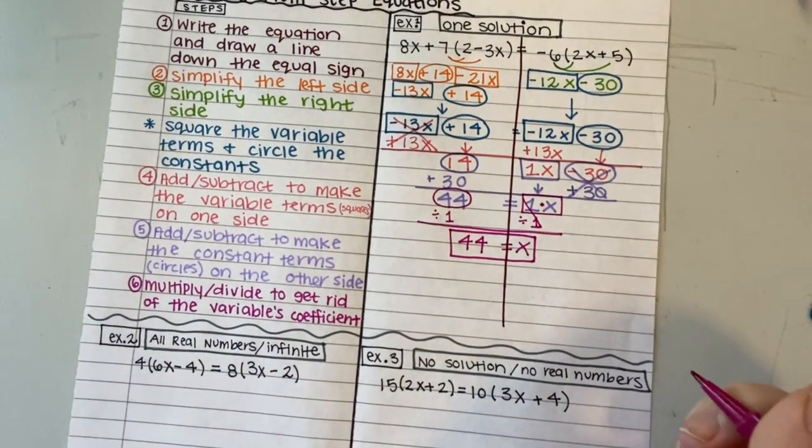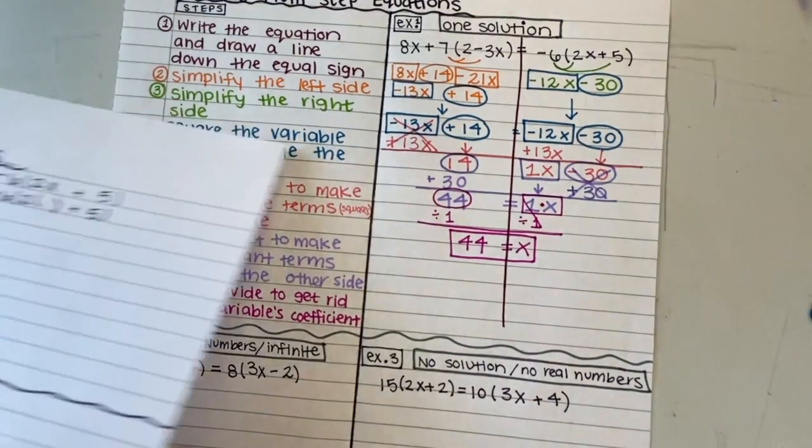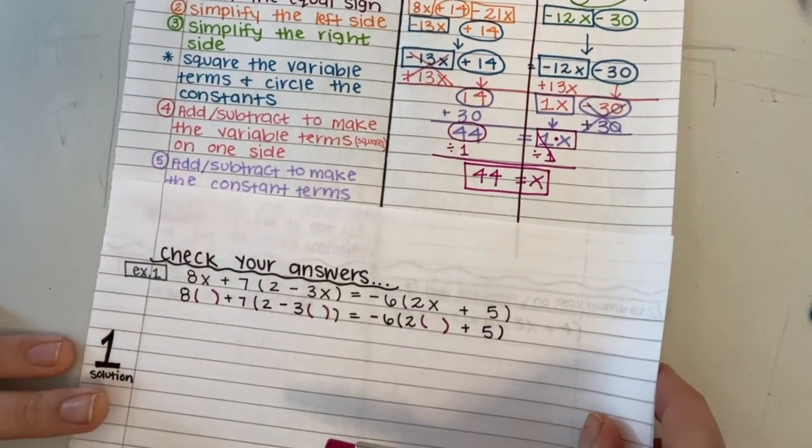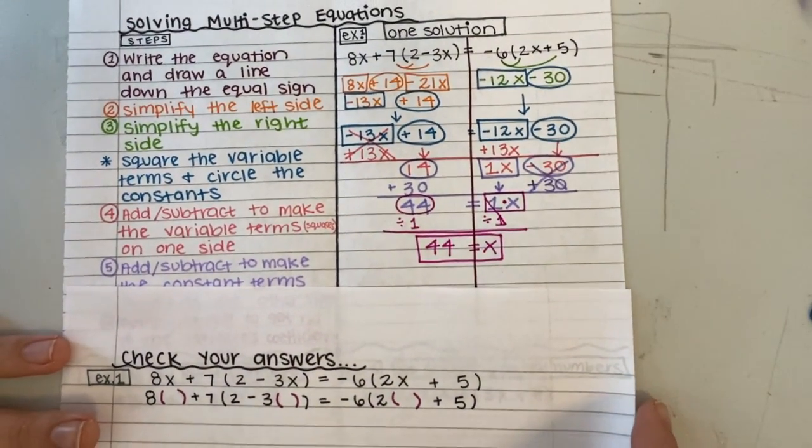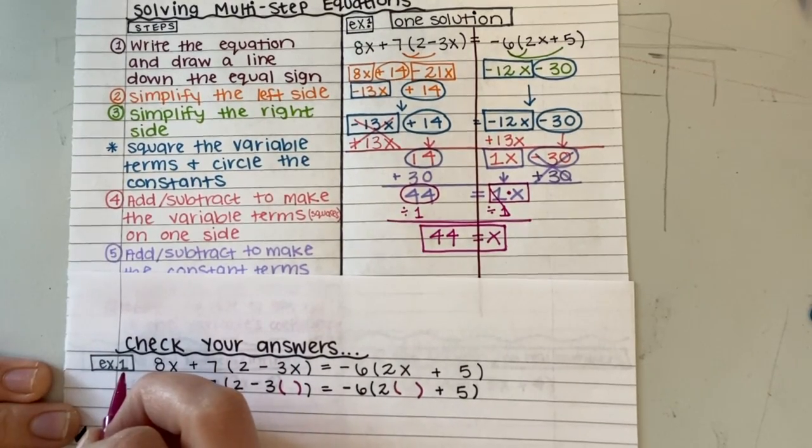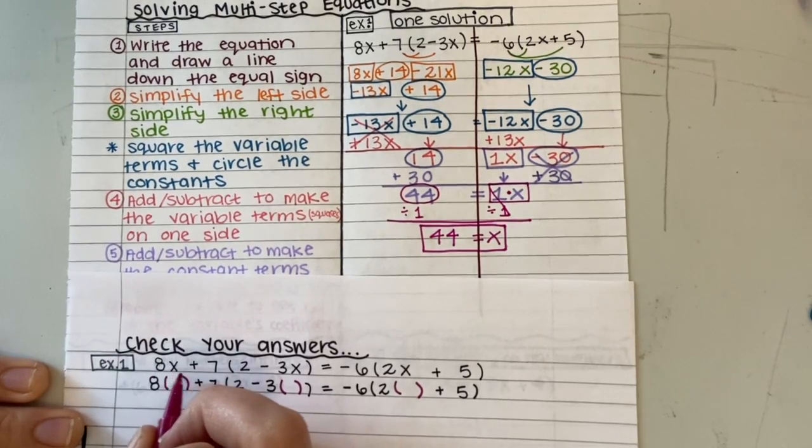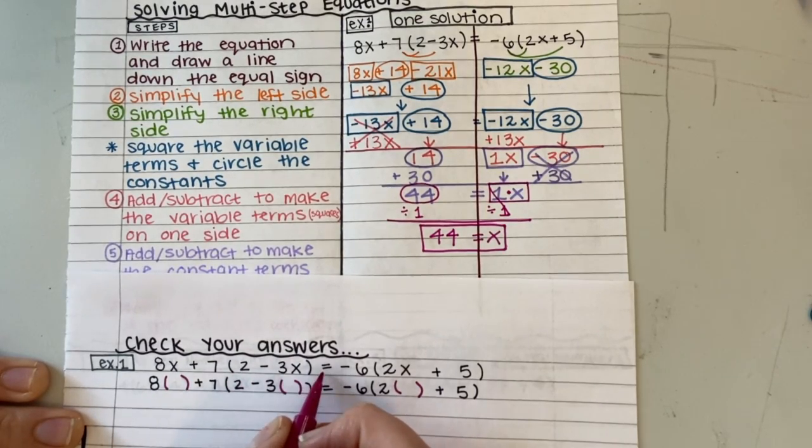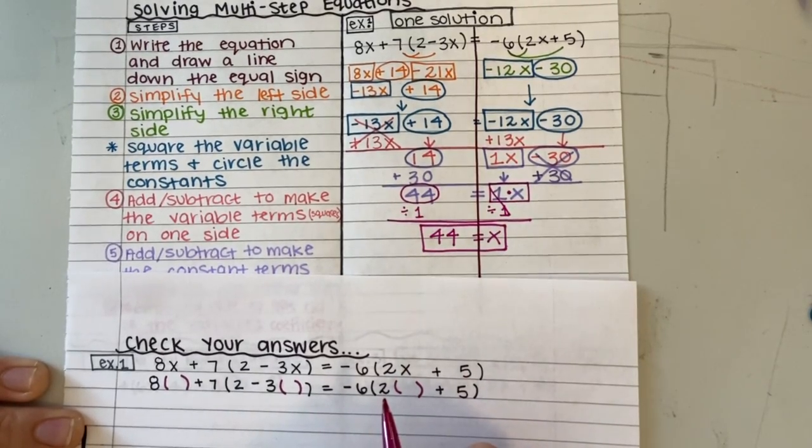There's a way to check these type of problems. When we check our answer, what we are doing is looking at the original equation and plugging in our answer to ensure we did the problem correctly. Down here it says check your answer, example 1. And we have that same equation: 8x plus 7 times 2 minus 3x equals negative 6 times 2x plus 5.